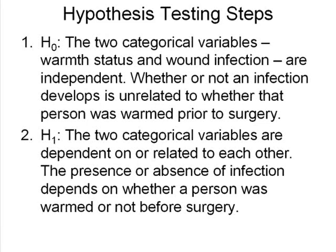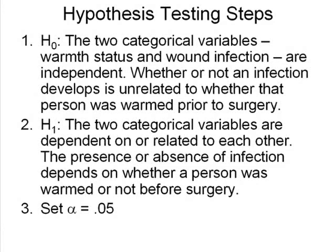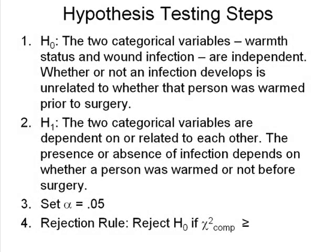Step three is, like always, we just set our alpha, and we set it at 0.05. Then we have a rejection rule: reject HO if chi-square computed is greater than or equal to the critical value. This is a little different — before, we used absolute values around our computed number, but with a chi-square that's not needed because we're squaring everything. A negative squared is positive, a positive squared is positive, so all chi-squares are positive. We don't have a negative chi-square, so we don't need the absolute value sign.